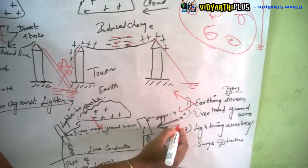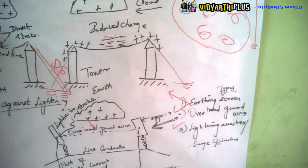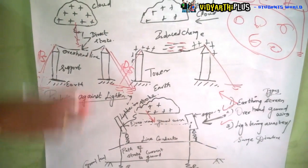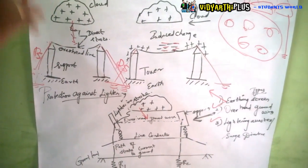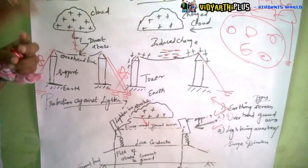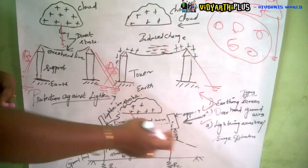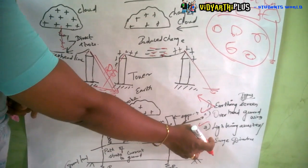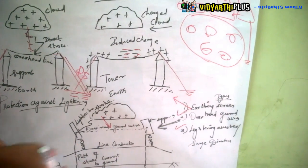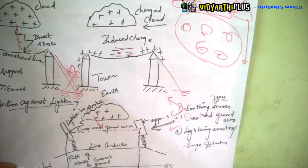The third method is the lightning arrestor, also known as a surge diverter — similar to those used to protect tall buildings — which will be covered in the next section.